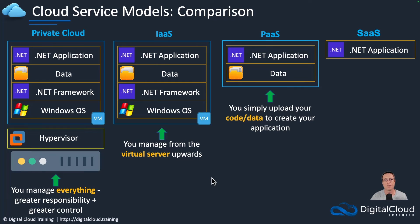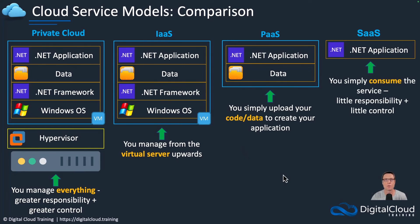If you go to Platform as a Service, you lose some of that responsibility — you outsource it. Now all you're doing is bringing your data and the code for your application; everything underneath is managed. And then with SaaS you basically don't have much responsibility, but you also have less control. Moving from the private cloud on the left — where you have larger expense and larger complexity — through to a SaaS service on the right, where you no longer have to worry about a lot of stuff, but you have less scope to modify or customize it to your own requirements.